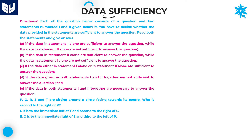The first question in this session is: P, Q, R, S, T are sitting around a circle facing the center. There are a total of 5 members. We need to draw the diagram with all 5 members sitting around the circle, all facing towards the center. The question is: who is second to the right of P?